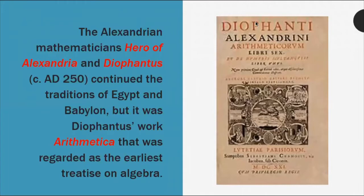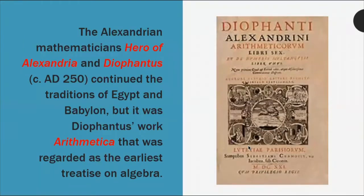During the time of Diophantus, the Alexandrian mathematician — Diophantus of Alexandria, circa AD 250 — he continued the traditions of Egypt and Babylon. But it was Diophantus' work Arithmetica that was regarded as the earliest treatise on algebra. This is his book — written evidence of Diophantus' contribution to the development of algebra.